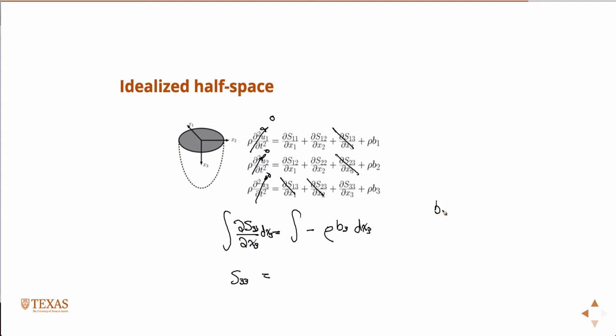And we'll say that the body force in the 3 direction is minus gravity. So in other words, density is a function of x3, the distance into the board, or down, rather, times gravity integrated over however distance. That gives us this stress.